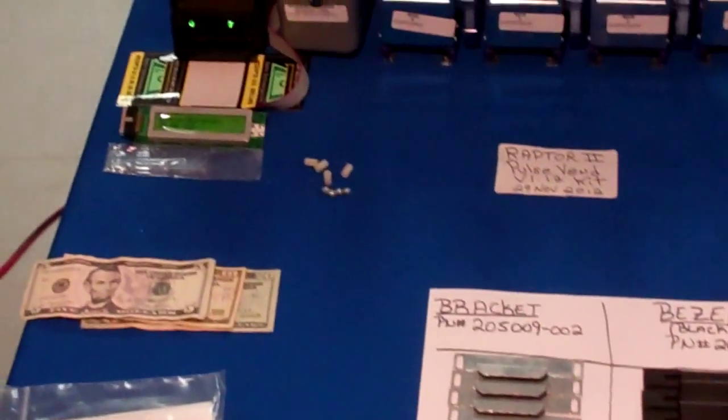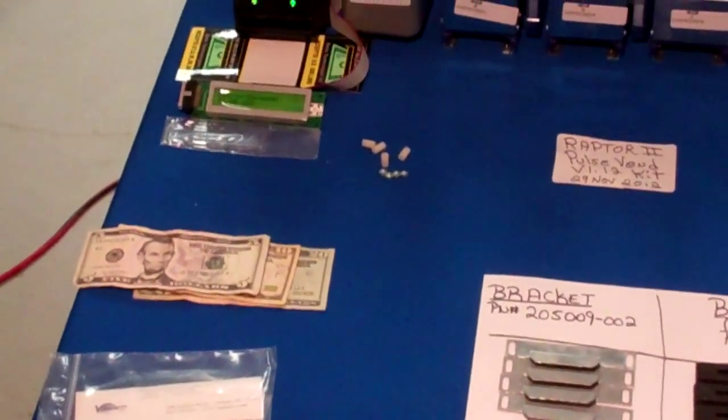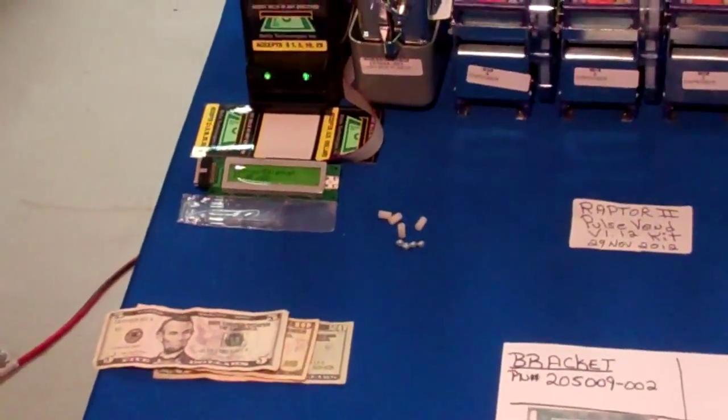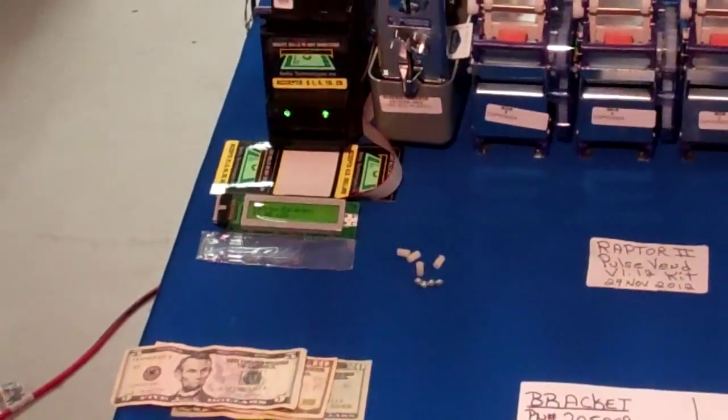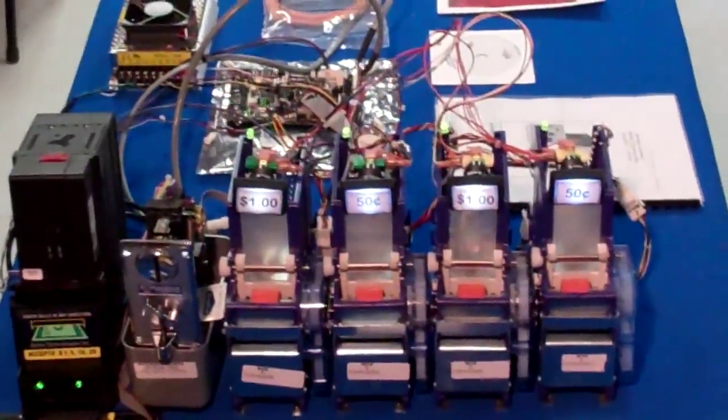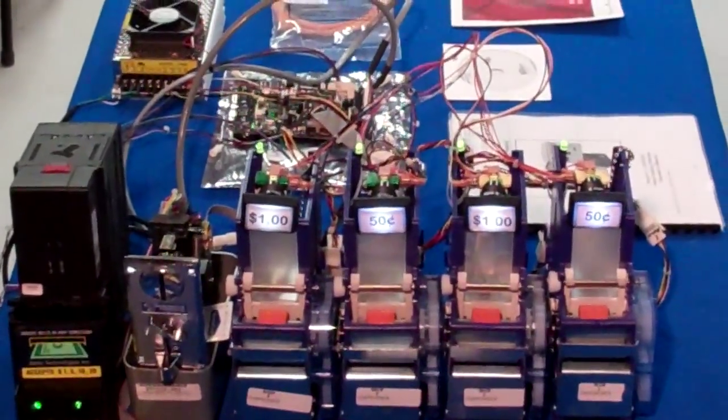The LCD is a 2x20. It gives you your different messages. In the background here, you'll see the Raptor 2 controller board.